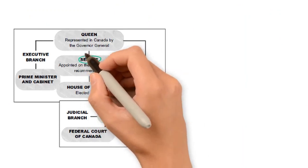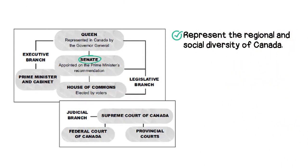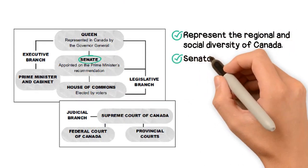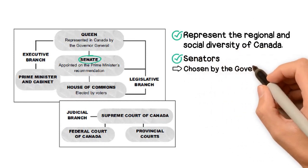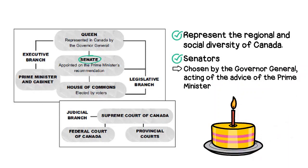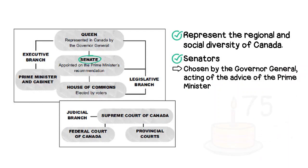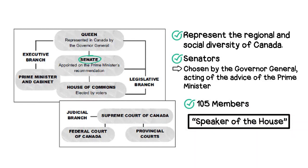The next branch of Parliament is called the Senate. The Senate's purpose is to represent the regional and social diversity of Canada. It is run by Senators, who are not elected but appointed and come from across the country. They are chosen by the Governor-General, acting on the advice of the Prime Minister. Once they become a Senator, they can remain a Senator until they are 75 years old. There are 105 members of the Senate, and they elect a Speaker of the House. They are often called the Upper House, and are usually a part of the upper class.